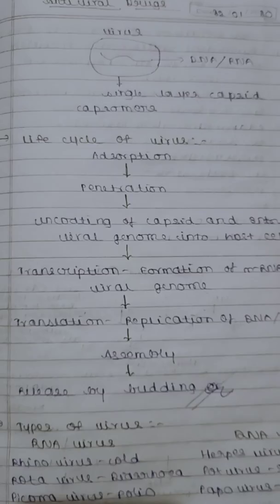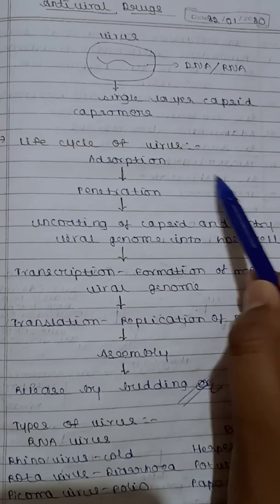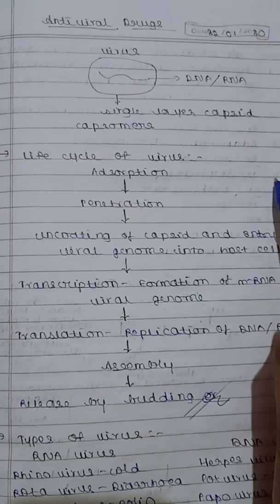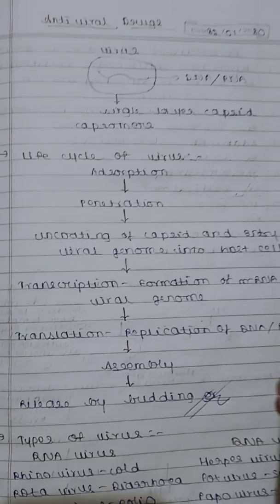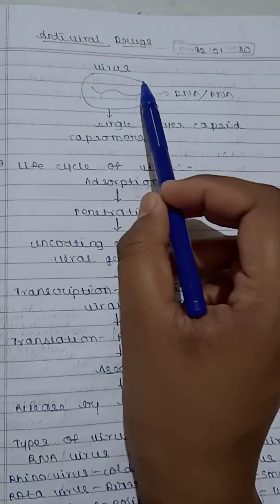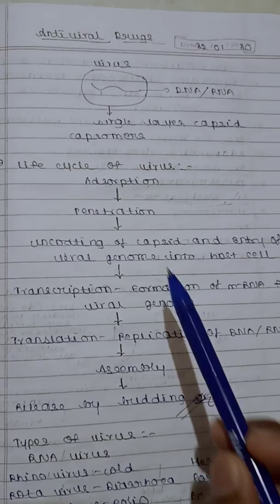Moving to the lifecycle of the virus: the virus will adsorb to the cell. A number of cells are present in our body; the virus will go and attach, bind, and adsorb to these cells. Once attached, it will penetrate into the cells. This involves uncoating of the capsid and entry of the viral genome into the host cell — the capsid gets ruptured, opened, and uncoated, and the viral genome (DNA or RNA) enters the host cell.